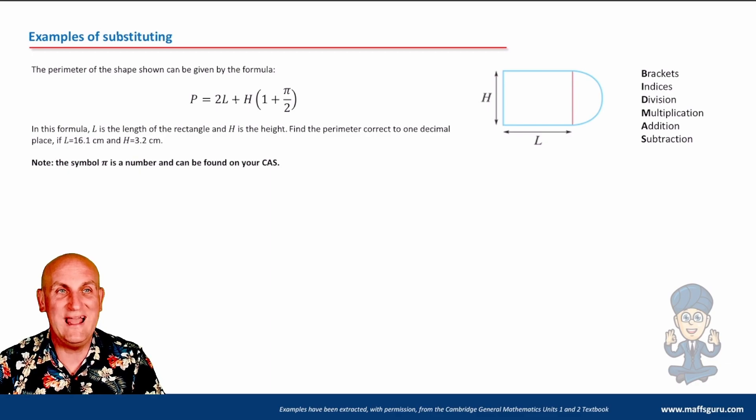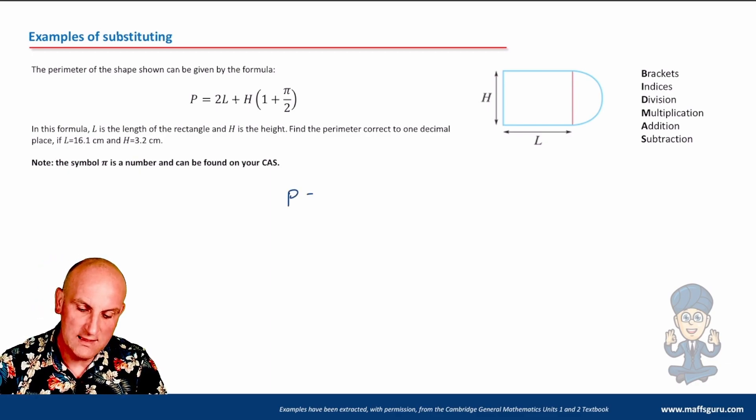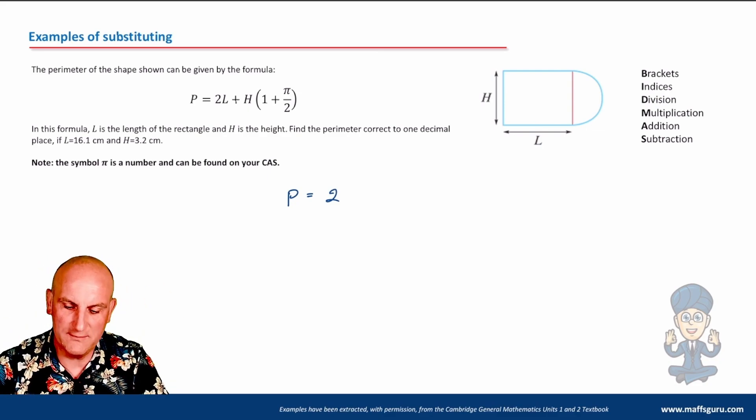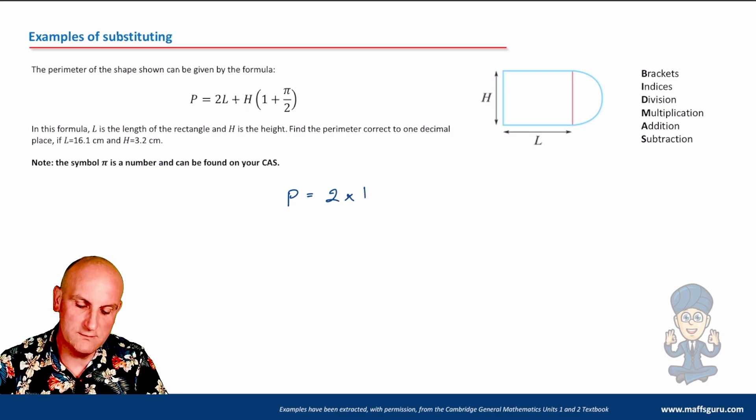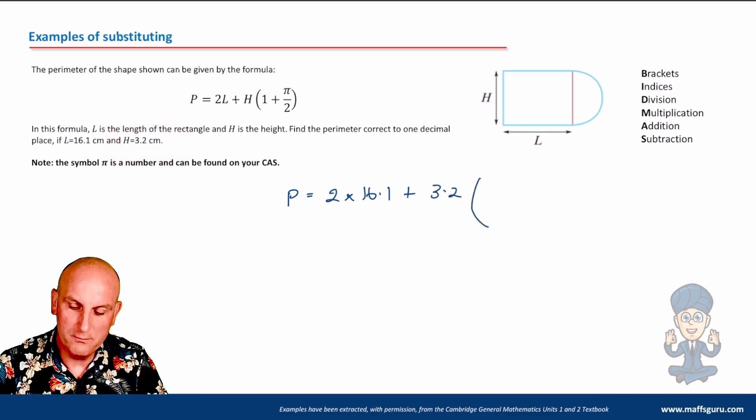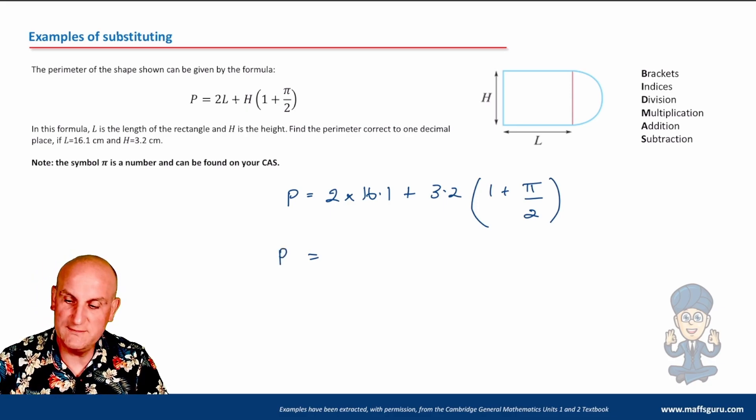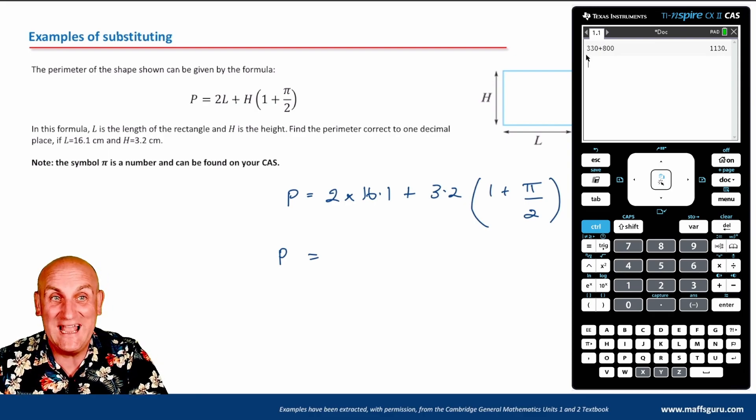Well, they've said perimeter is P. If L equals 16.1 and H equals 3.2. So what they're saying is where you see an L, put 16.1. So P equals 2. Now I always remember between a number and letters, a kissy kissy. So 2 times 16.1. Where did I get that from? L. And they've told me let L be 16.1. So let's work across the formula. Plus H. Well, they told me that H was 3.2. Brackets 1 plus PI on 2. Well, basically there's my formula and substitute. I've now substituted.